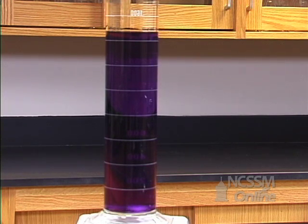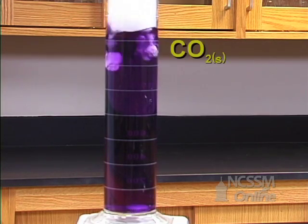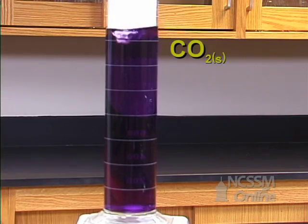As the carbon dioxide dissolves in the water, it will produce carbonic acid. The pH will go from a high pH to a low pH, and we'll see the color range for universal indicator.